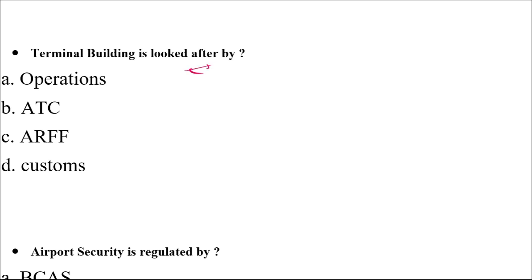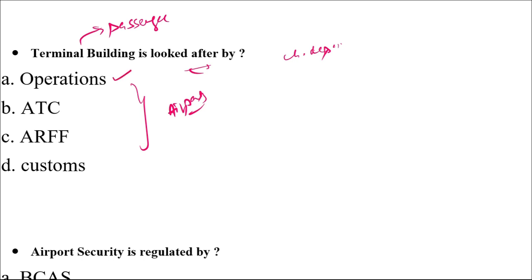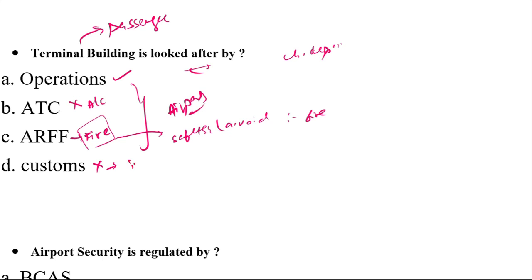Which department looks after the terminal building? The terminal building is a passenger building where passengers come and go. From the chapter on different departments, the terminal building is maintained by the Operations Department. ATC only takes care of aircraft, not the terminal. ARFF belongs to fire services — they are primarily responsible for fire safety and accident prevention. Customs deals with immigration purposes only, whereas the terminal building is common to both domestic and international passengers. So the correct answer is the Operations Department.